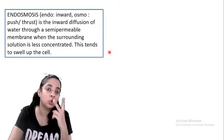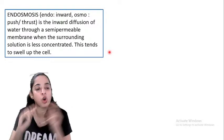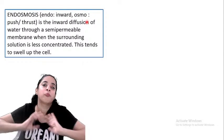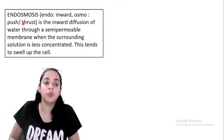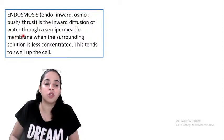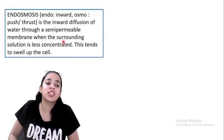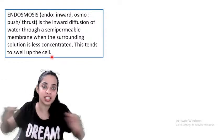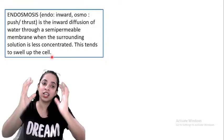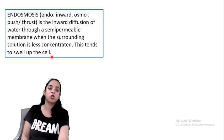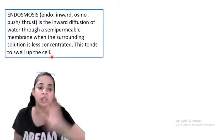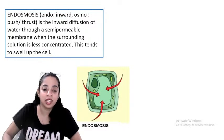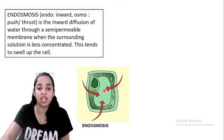There are two types of osmosis: endosmosis and exosmosis. Endosmosis: endo means inward, osmo means push or thrust. Endosmosis is the inward diffusion of water through a semi-permeable membrane when the surrounding solution is less concentrated, and this tends to swell up the cell. Exosmosis: exo means outward. Exosmosis is the outward diffusion of water through a semi-permeable membrane when the surrounding solution is more concentrated, and this tends to cause shrinkage of the cell.